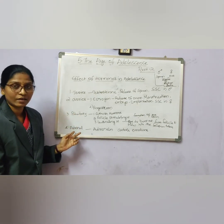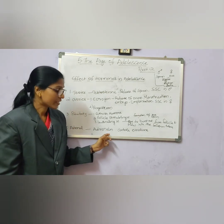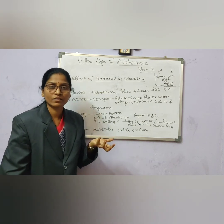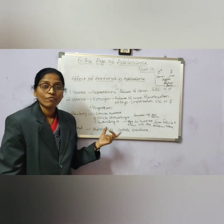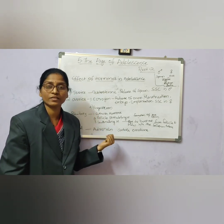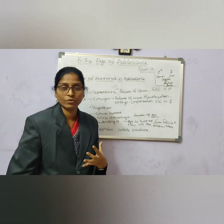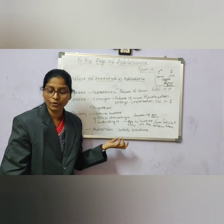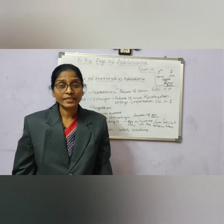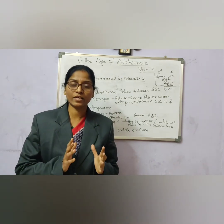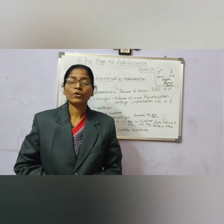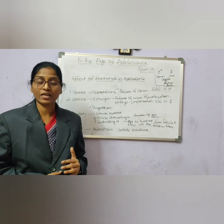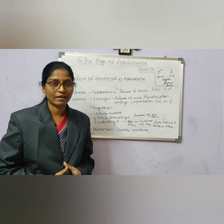The adrenal gland produces the hormone adrenalin, which controls emotions. It is also known as the fight-and-flight hormone. These are the different hormones that influence adolescent girls and boys. As stated by psychiatrist Stanley Hall, adolescent age is the age of stress and strain. With the proper guidance of parents, teachers, and well-wishers, you can lead a happy life ahead.